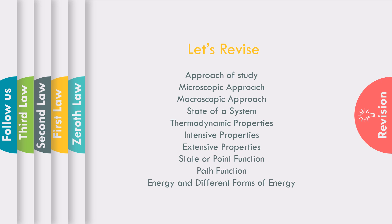Then we started with the state of a system, followed by thermodynamic properties — that may be temperature, pressure, mass, density, or many more. Followed by intensive properties, extensive properties, state or point functions, and path functions, along with the quantities possessing either. Finally, we covered energy and its different forms: potential energy, kinetic energy, internal energy, and lastly enthalpy.